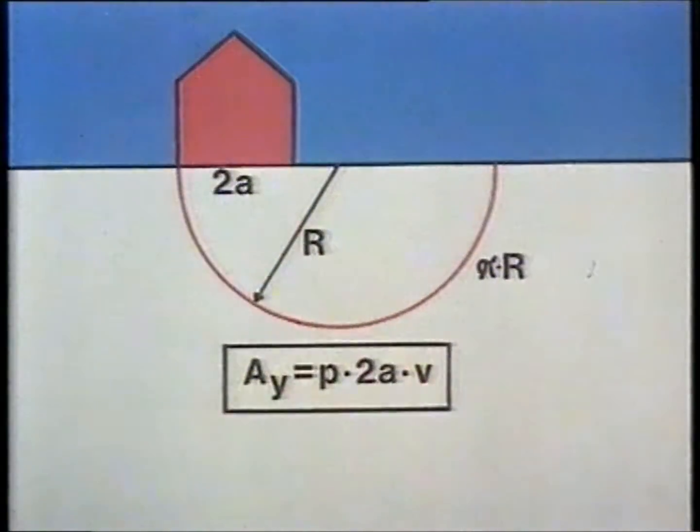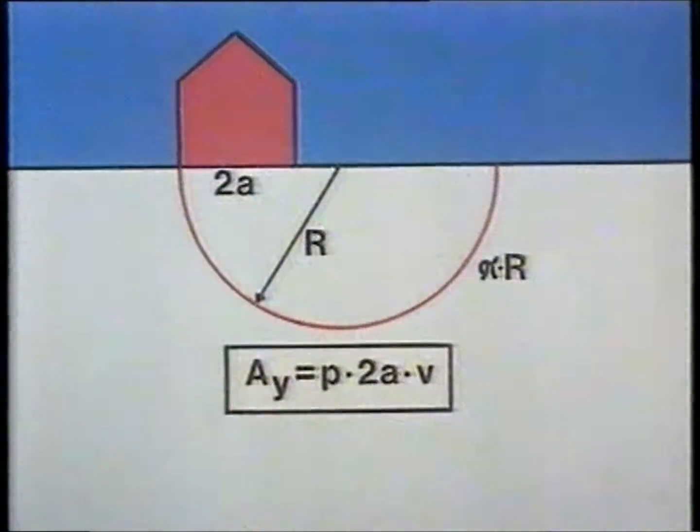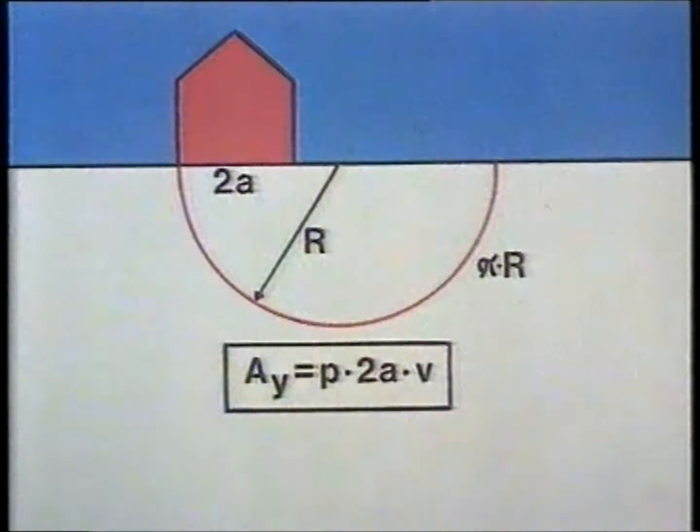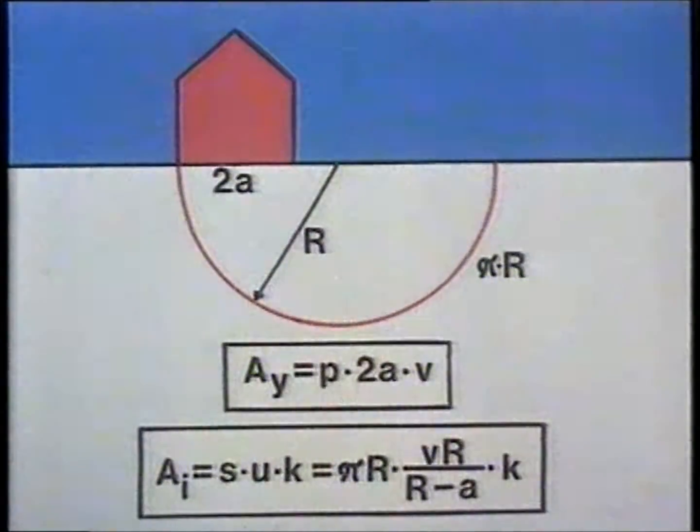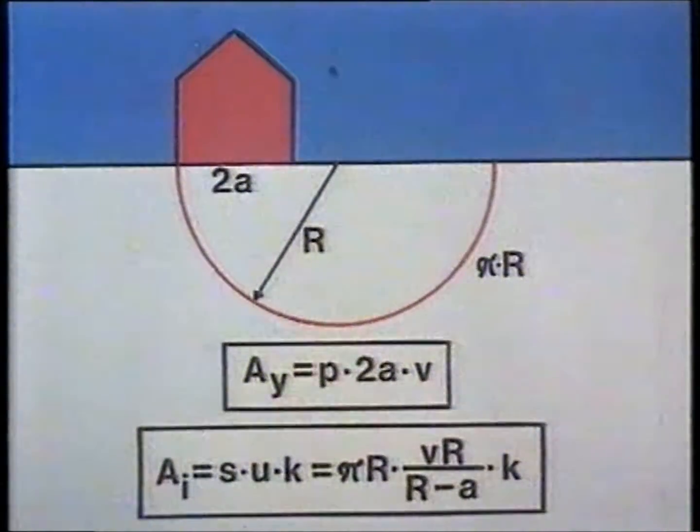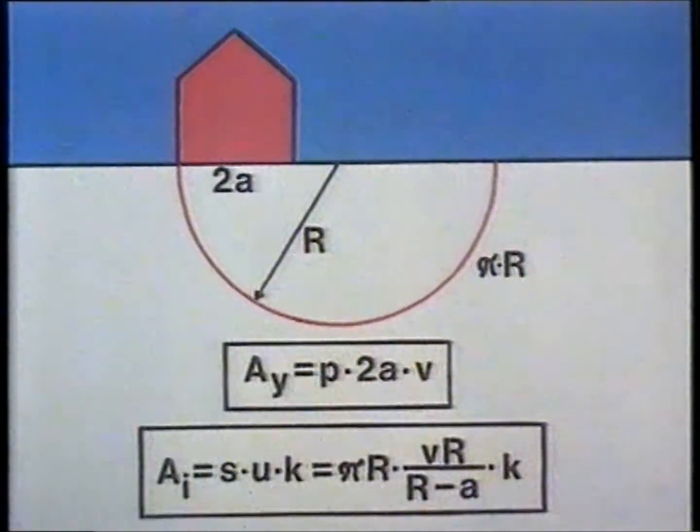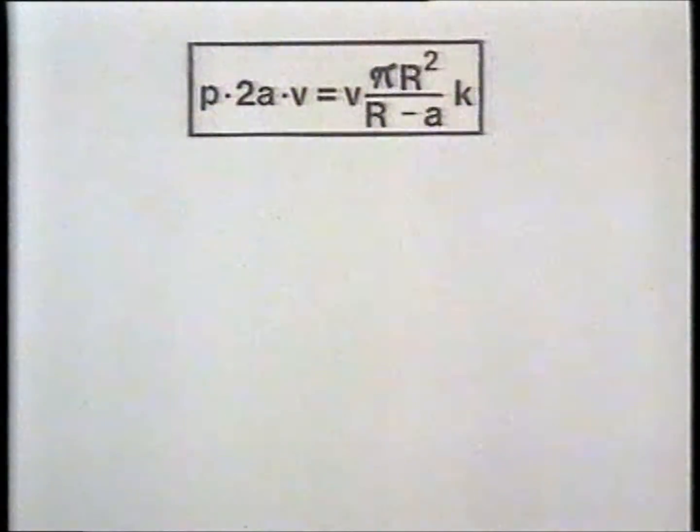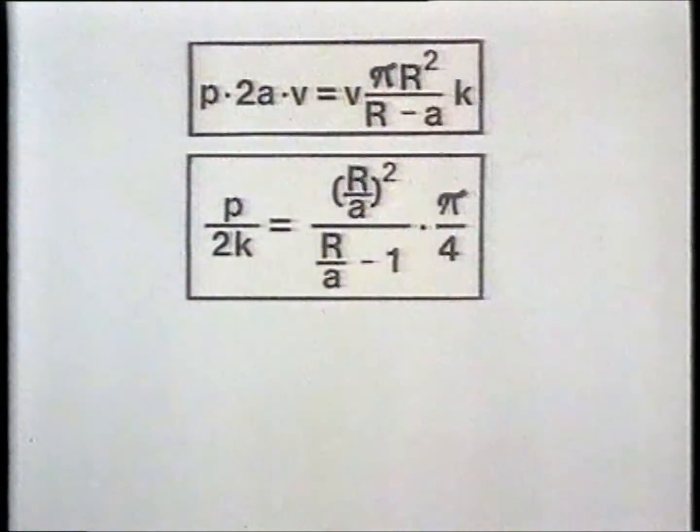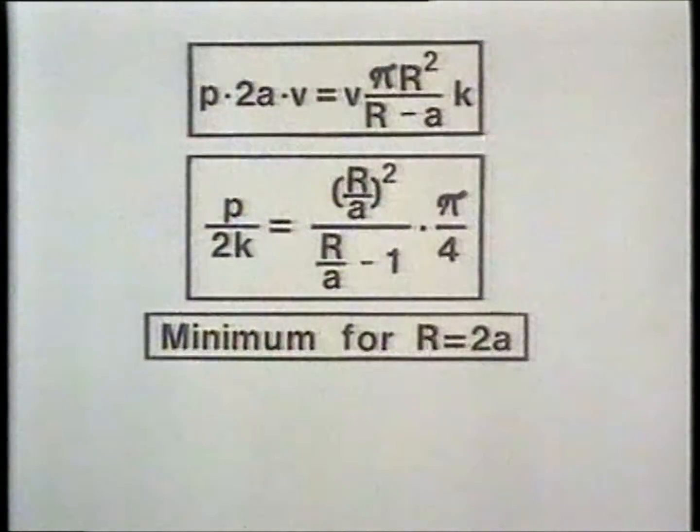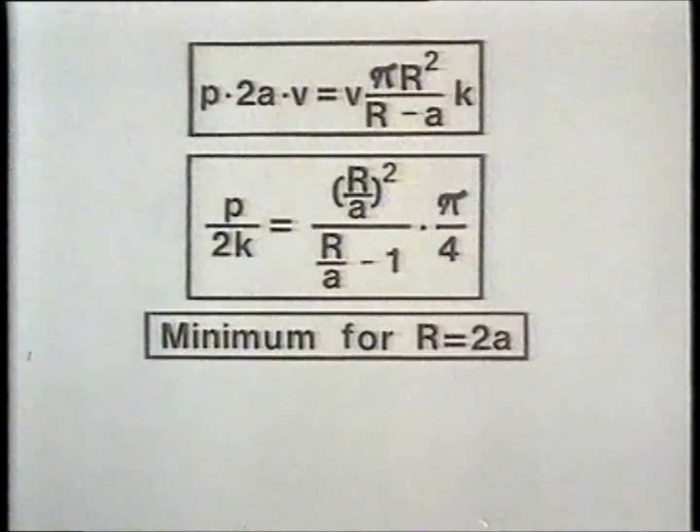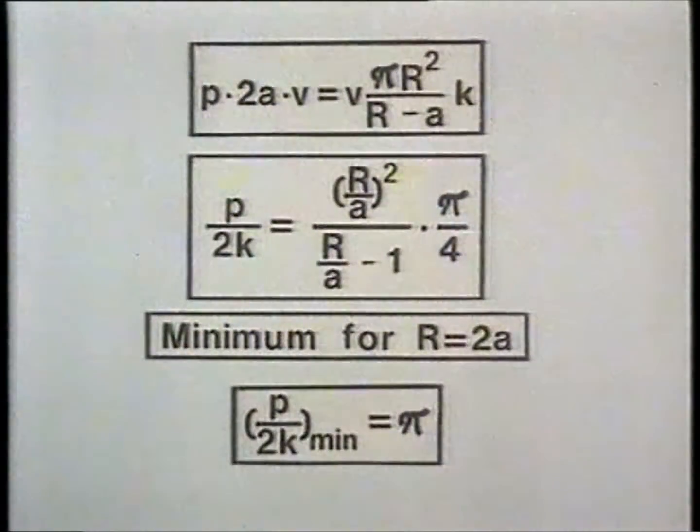The rate of internal work is calculated from the expression s times u times k. Putting the two rates of work equal to each other we get this expression for p which is minimum when r is equal to the ground line 2a. This makes the value for p over 2k equal to pi.